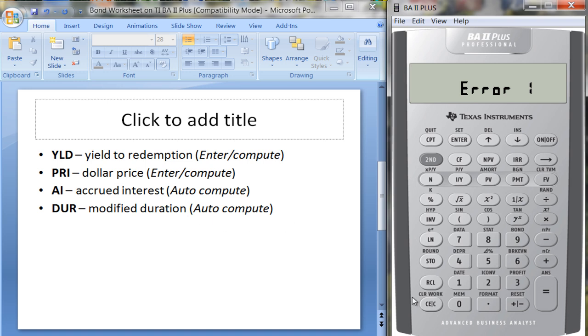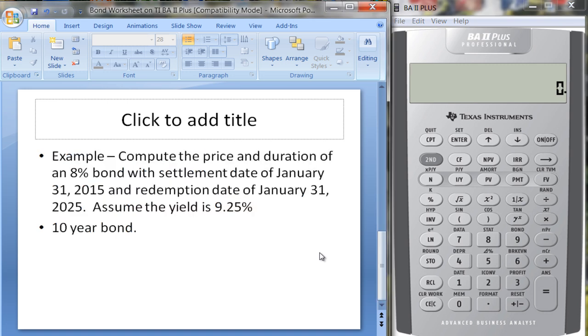All right, so let's take a look at an example. Let's compute the price and duration of an 8% bond with settlement date of January 31st 2015 and redemption date of January 31st 2025. Assume that the yield is 9.25%. So I've made this example so it's a 10 year bond.